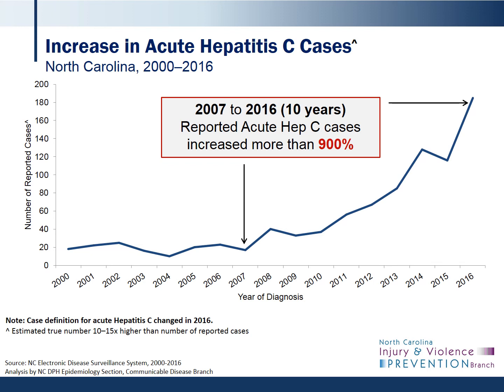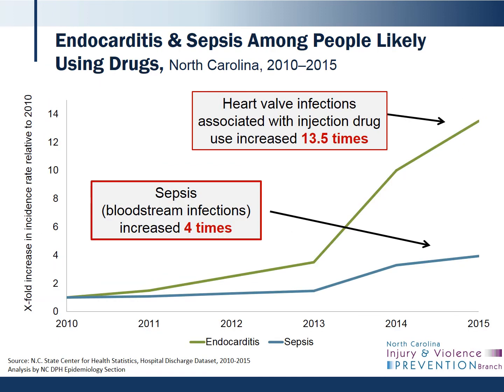Overdose events aren't the only impact of the drug epidemic. Hepatitis C, a blood-borne infection, is most often spread by sharing injection supplies, and new hepatitis C infections increased more than 900% over the last 10 years. The biggest increases in acute hepatitis C are in the same regions and the same demographic groups with the highest rates of overdose death. Heart valve and bloodstream infections associated with injection drug use have also been increasing since 2010.